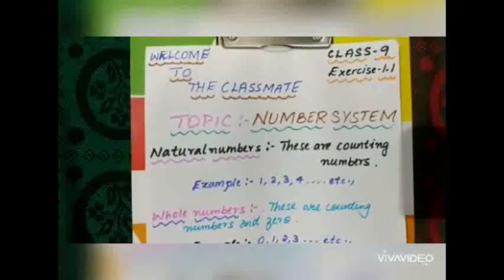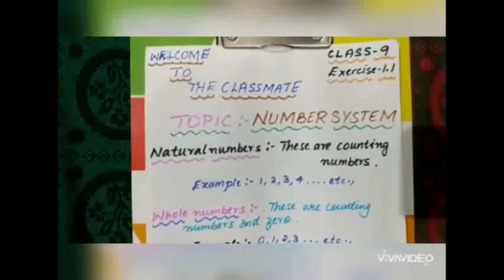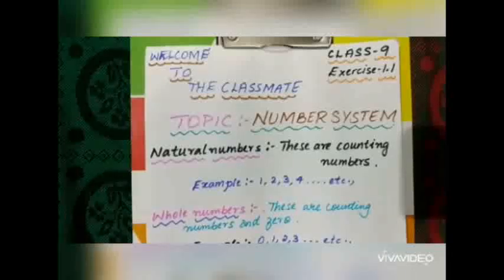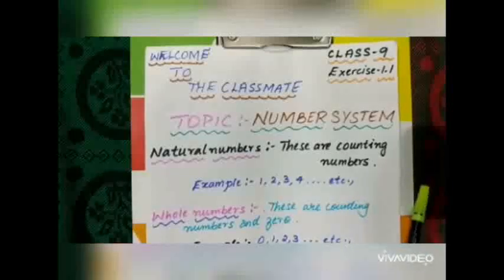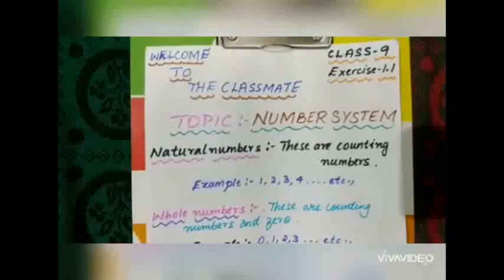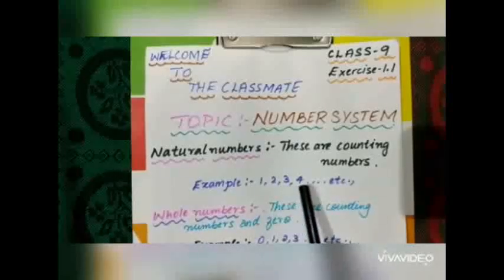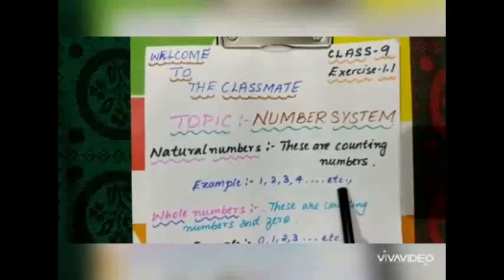The number system basically includes natural numbers, whole numbers, integers, rational numbers, and irrational numbers. The natural numbers are the counting numbers which can be counted and they are infinite. Examples are 1, 2, 3, 4, etc.